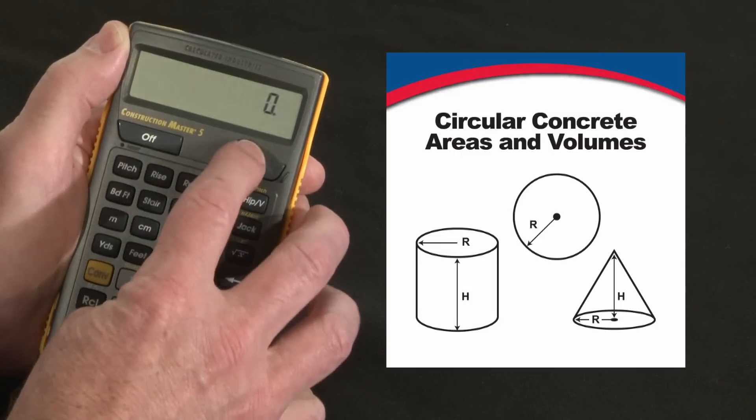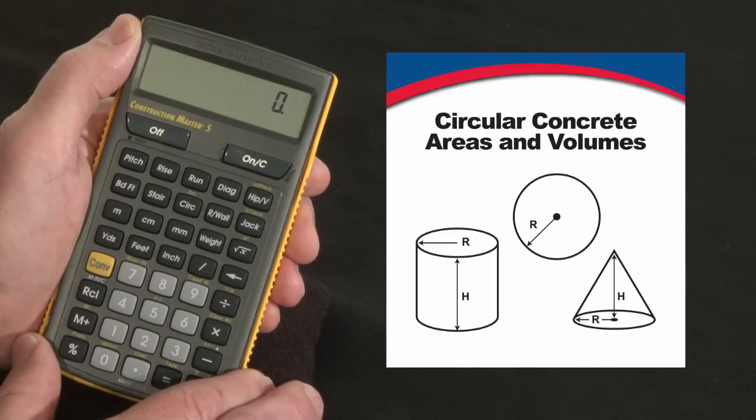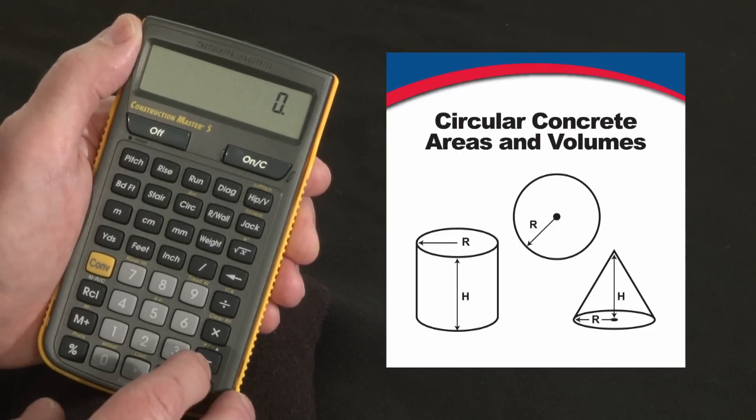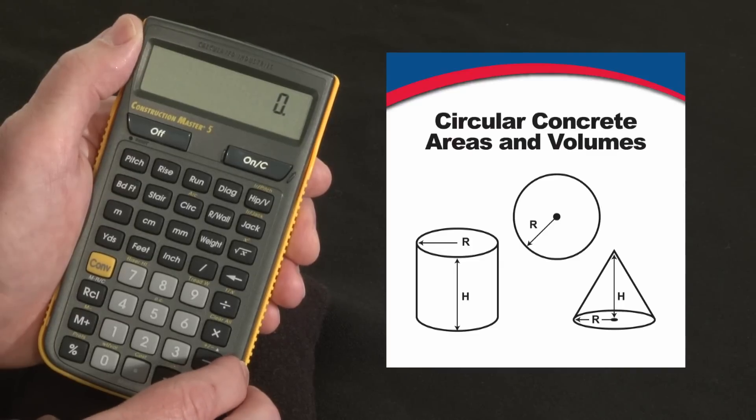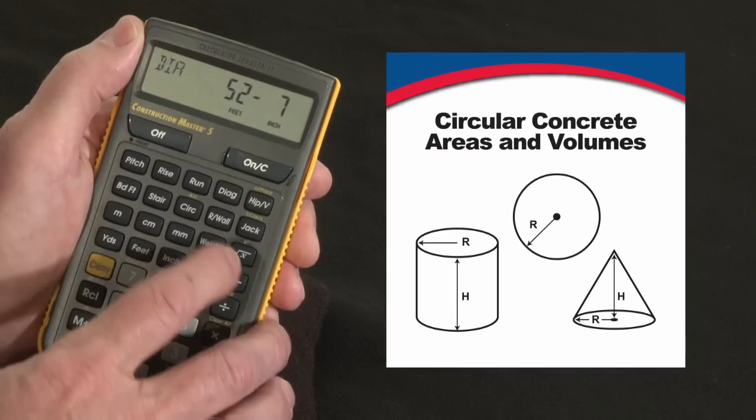Now another similar calculation that came up at the last World of Concrete show, a guy asked me if we could calculate silo pad volumes for him. I thought it had something to do with rockets and space, but he said no, it had to do with grain elevators. He had these very large circles underneath the grain elevators of concrete, so he said it's a 52 foot 7 inch diameter.